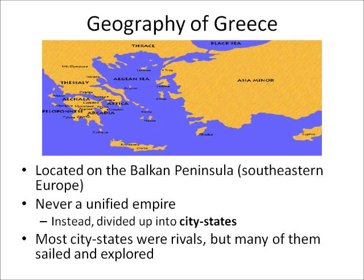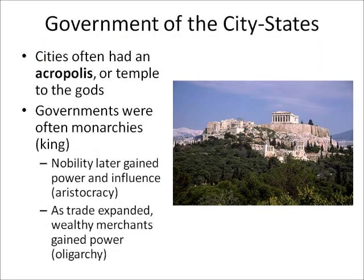A lot of these societies sailed all over the Mediterranean Sea. They explored, traded, and developed culture based on what they encountered in places like the Middle East. The gods were incredibly important in ancient Greece, and most cities had what was known as an acropolis — a temple built for the gods, often at the top of a hill. You can see in that picture the building with columns — that's the acropolis in Athens, and the ruins still stand there today.